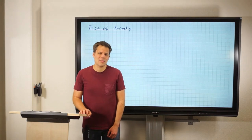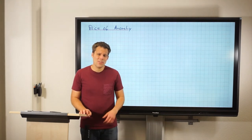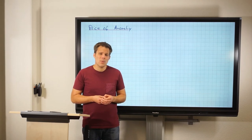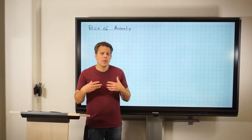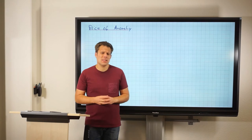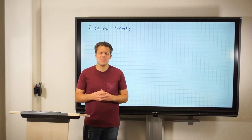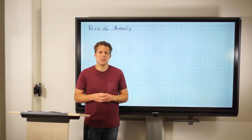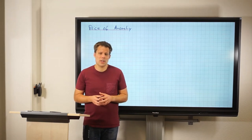Hello and welcome back to our class on algorithmic game theory. So far we've seen a number of ways to model strategic behavior — more precisely, equilibrium concepts which reflect what states strategic behavior might lead to. But implicit in these considerations was that strategic behavior is somehow bad for society. Today we will try to quantify this using the so-called price of anarchy, and we will be talking about the social cost of equilibrium.